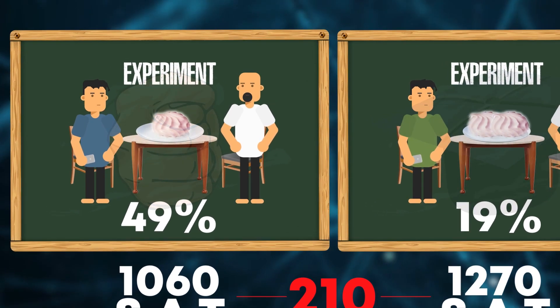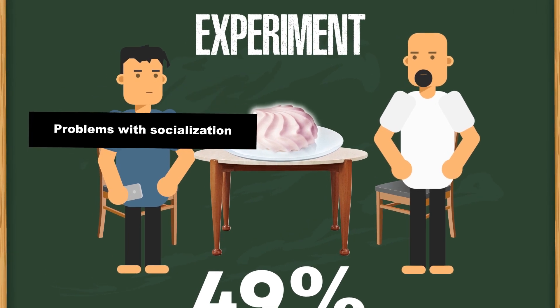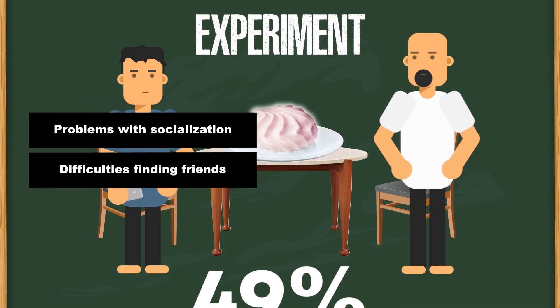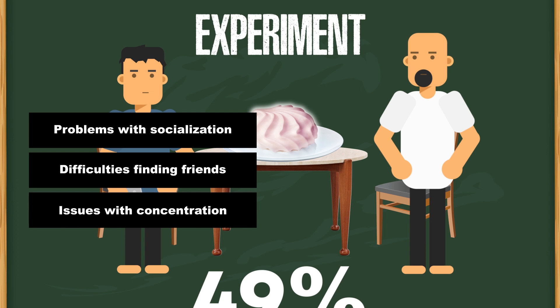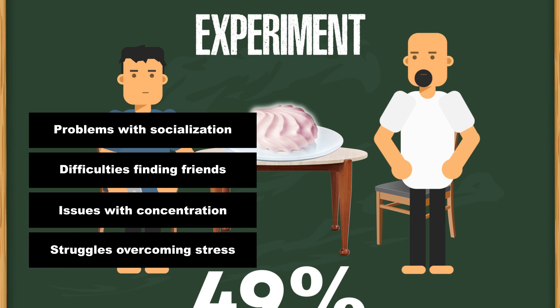Besides, impatient participants were experiencing problems with socialization. It was more difficult for them to make friends. They had issues with concentration and struggled with handling stressful situations.